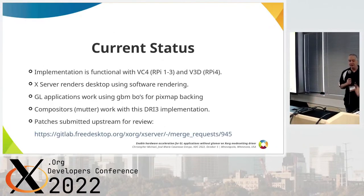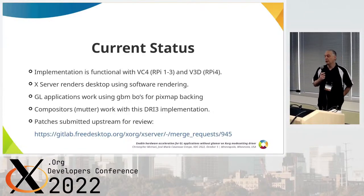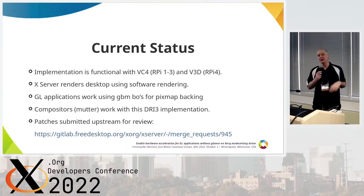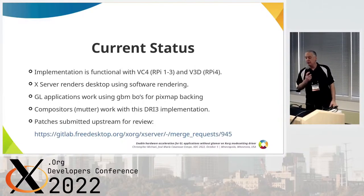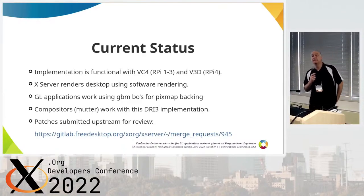Our current status: the implementation is functional with VC4, which covers Raspberry Pi 1 through 3, and also functional on V3D, which is Raspberry Pi 4. The desktop renders using software and GL applications work using GBM buffer objects for pixmap mapping. Compositors such as Mutter do work — we tested a couple of other compositors and they are functional. I still need to do more testing on an Intel box, as most testing was done on Raspberry Pi. I did submit the merge request upstream for review; it's MR 945.